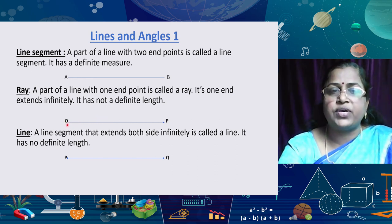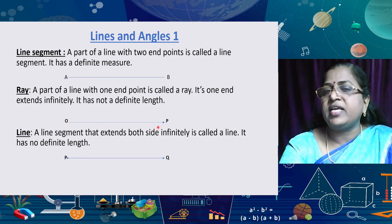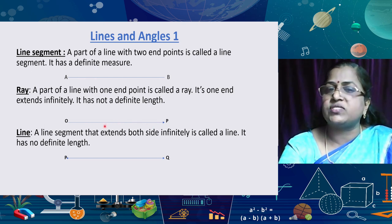Now, what about ray? A ray means a part of a line with one endpoint — it is called a ray, and its one end extends infinitely; therefore it has no definite length. So here, starting from O, OP is a ray — P is extending on one side, so we can say it has no definite length.